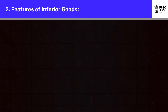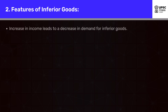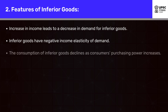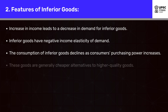Features of inferior goods: An increase in income leads to a decrease in demand for inferior goods. Inferior goods have negative income elasticity of demand. The consumption of inferior goods declines as consumers' purchasing power increases. These goods are generally cheaper alternatives to higher quality goods.